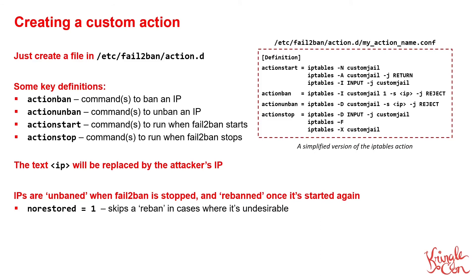A key thing to note is that when the Fail2Ban service is shut down, it will run the unban command for any of the IP addresses that are currently banned, and then run the actionstop commands to tidy up. So effectively, if you shut the Fail2Ban service down, any bans that currently exist are undone. However, when the Fail2Ban service is then started again, it consults its internal database of currently banned IP addresses and will run the actionban command for any of those addresses where a ban is still in effect. Also note that you don't necessarily have to fill out values for all of these parameters — if you don't need any setup or teardown actions for your jail, you can just completely omit actionstart and actionstop.